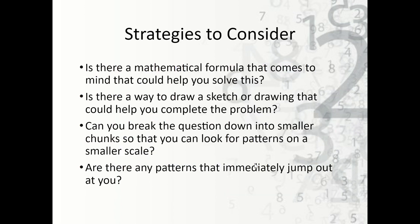Now let's talk about some strategies that we can use to help us solve this. First, is there a mathematical formula or equation you can think of to figure out which lockers are going to be open? If not, that's fine — move on to the next one. Is there a way to sketch or draw a graph or some kind of visual aid? Maybe there is, maybe there isn't. If not, move on. Can we break the question down into smaller chunks? Instead of a hundred lockers, maybe we do twenty or ten lockers and see if there are any patterns we can recognize. If there's a pattern, we can try to expand it to the bigger problem. And lastly, are there any patterns that just immediately jump out to you? So these are some strategies to consider.